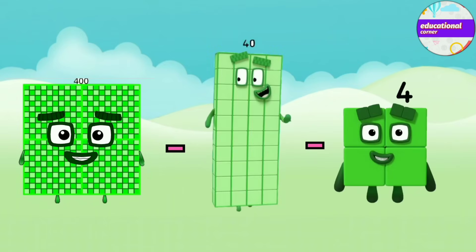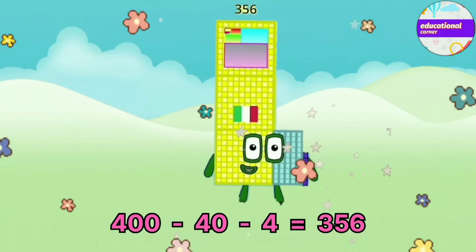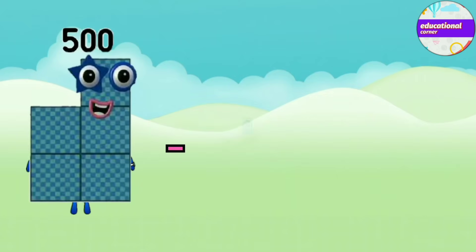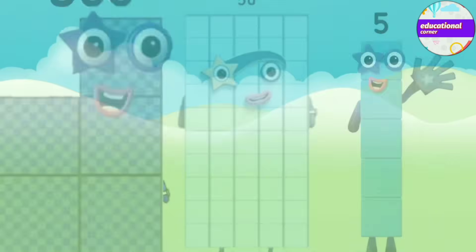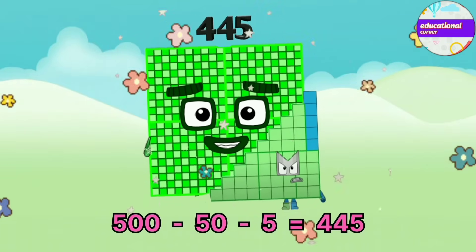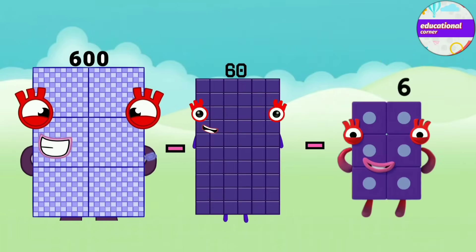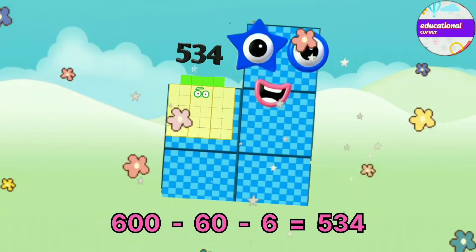400 minus 40 minus 4 equals 356. 500 minus 50 minus 5 equals 445. 600 minus 60 minus 6 equals 534.